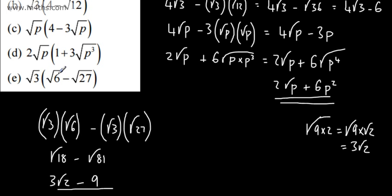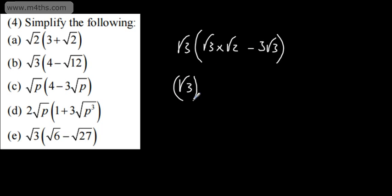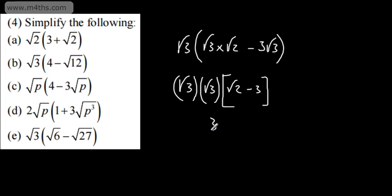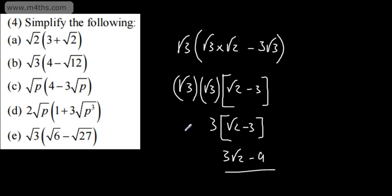You could also take root 3 out as a common factor. We'd rewrite root 6 as root 3 times root 2, and root 27 as 3 root 3. Taking out root 3, we'd have root 3 multiplied by root 3, times the bracket [root 2 minus 3]. Root 3 times root 3 is 3, giving 3 lots of root 2 minus 3, which is 3 root 2 minus 9 — the same answer, a few different approaches.